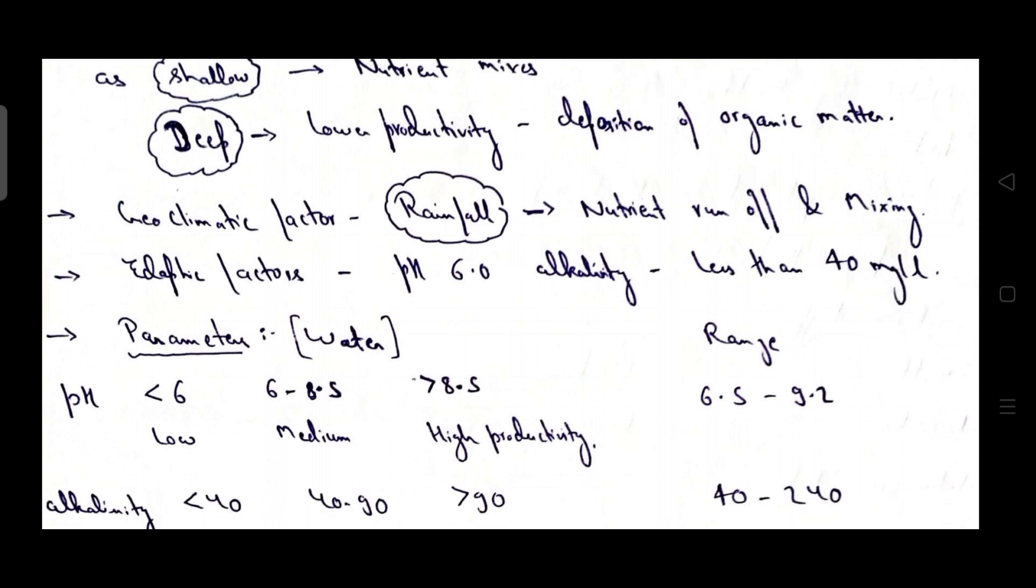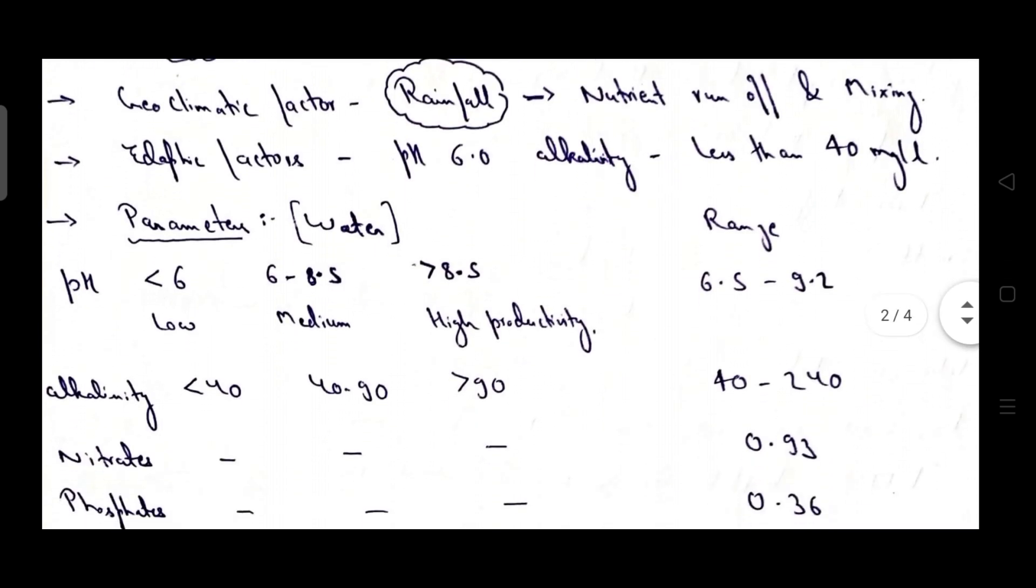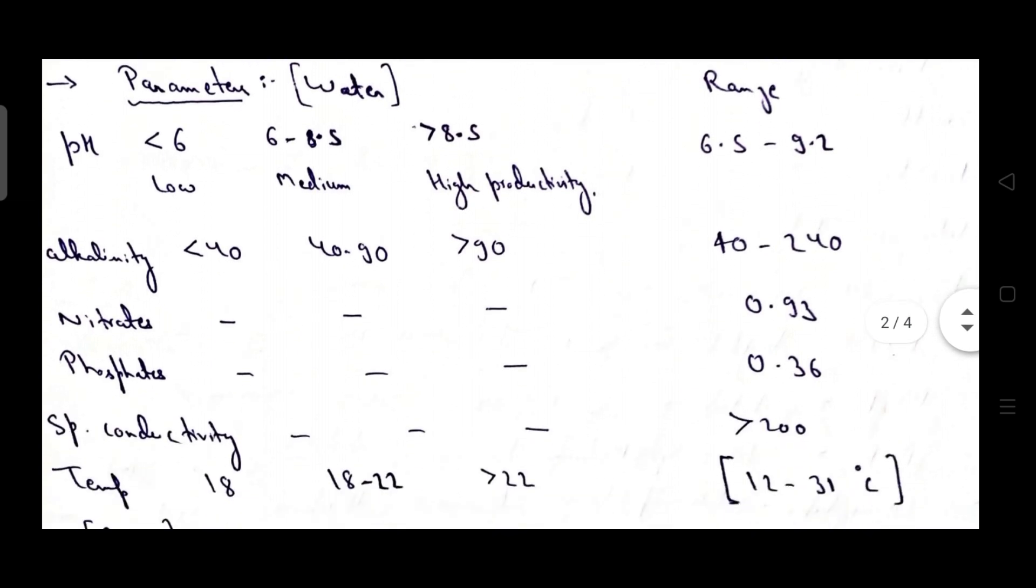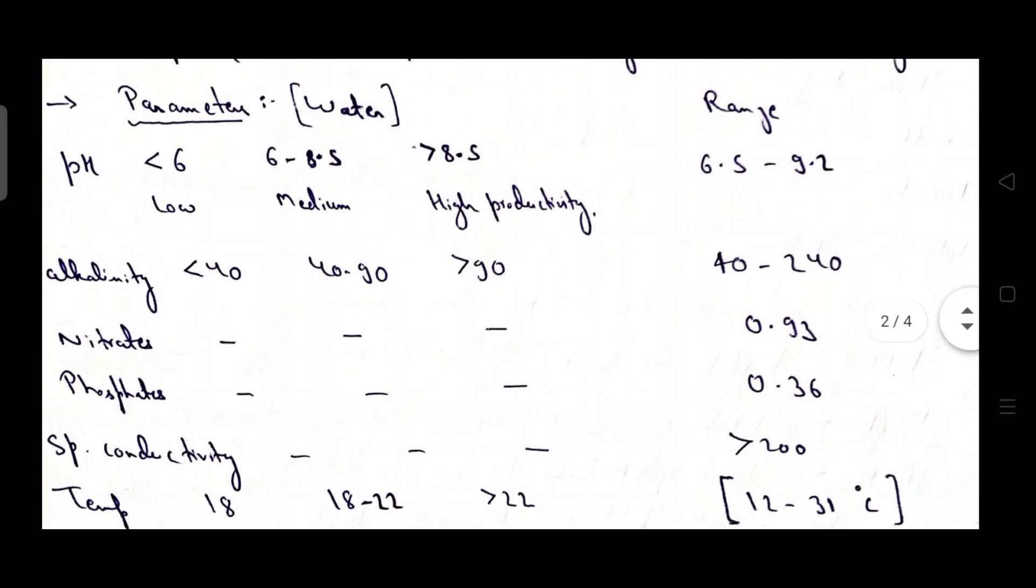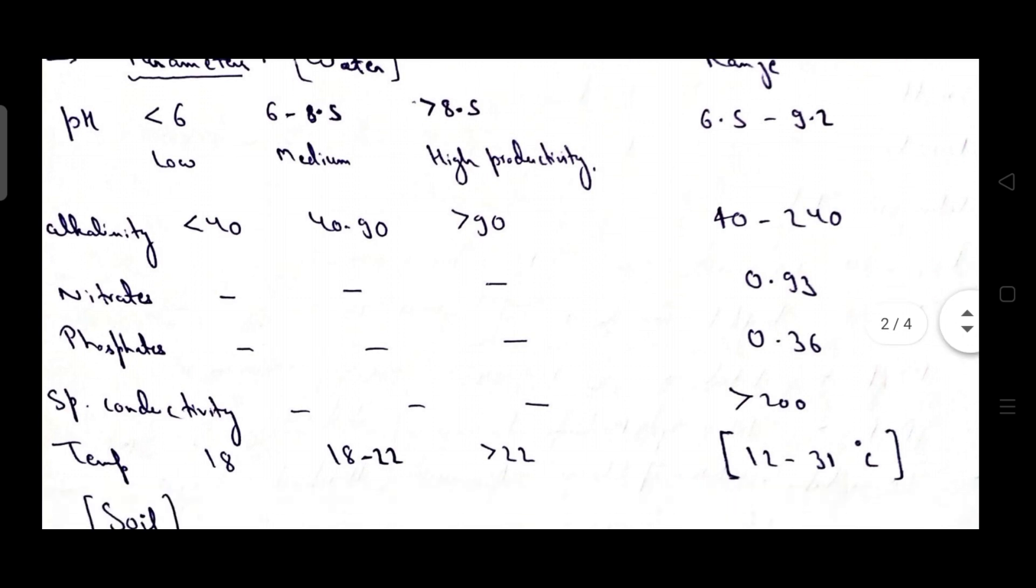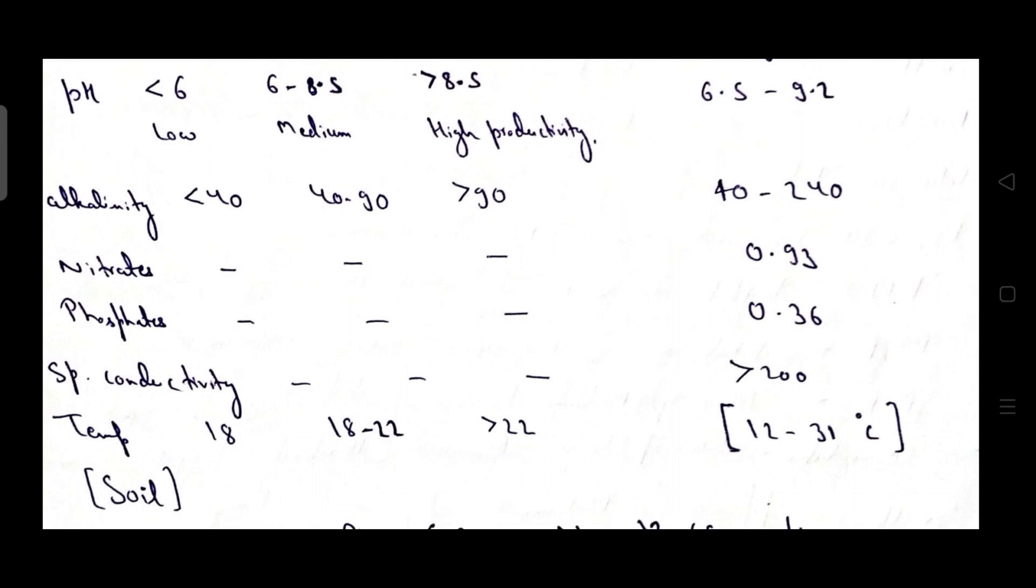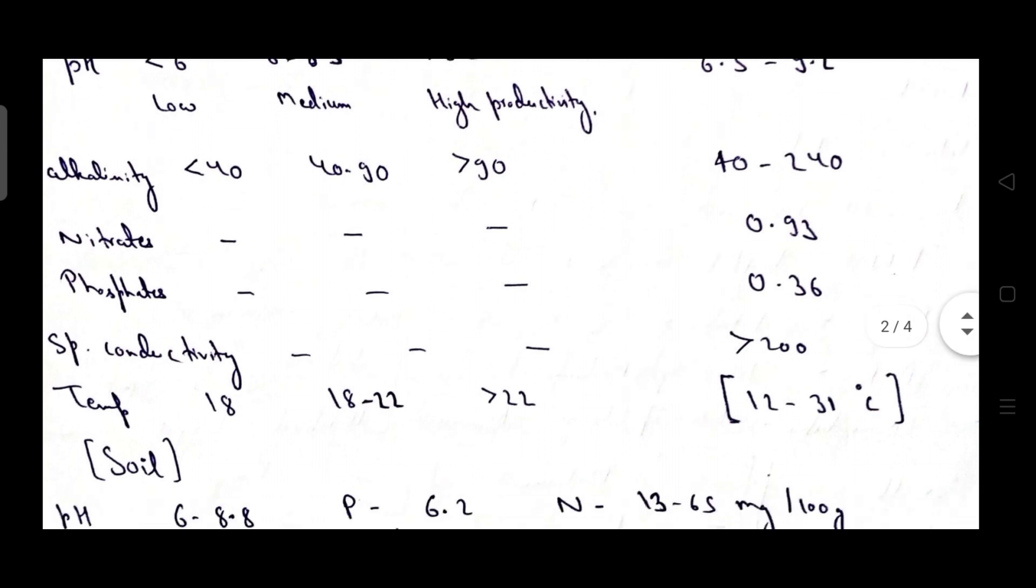Then coming to geoclimatic factor, rainfall plays the important role in reservoir productivity as it helps in nutrient runoff as well as mixing of nutrients. Then edaphic factor, alkaline pH is helpful for reservoir productivity. Then coming to parameter section, the water parameter range. pH range for reservoir productivity in case of water is 6.5 to 9.2, alkalinity range is 42 to 240, nitrate range is 0.93, phosphate is 0.36, specific conductivity greater than 200 and temperature range is 12 to 31 degrees celsius.